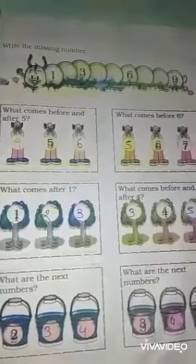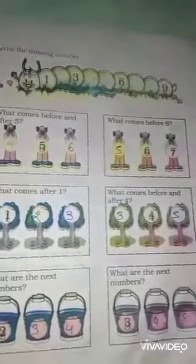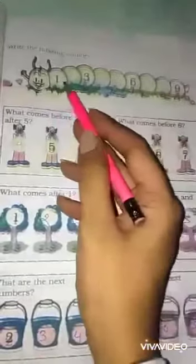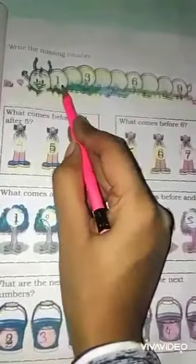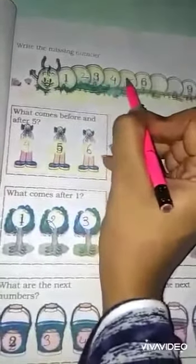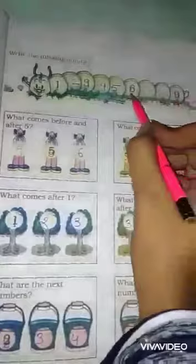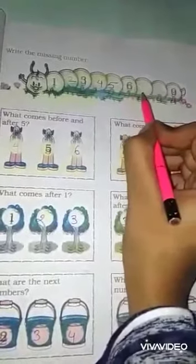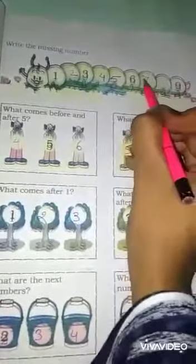Read the first question. Write the missing number. We have to write the missing number 1. What is the next number? Yes, it is 2, then 3. What is the next number? 4, 5, then 6. What is the next number? Yes, it is 7.